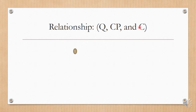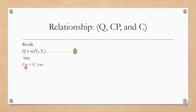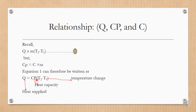The relationship between heat capacity and specific heat capacity: recall that Q is directly proportional to mass and temperature change. Since CP equals c times m, equation one can be written as Q equals CP multiplied by the change in temperature, where Q is the heat supplied, CP is the heat capacity, and (T2 minus T1) is the temperature change.